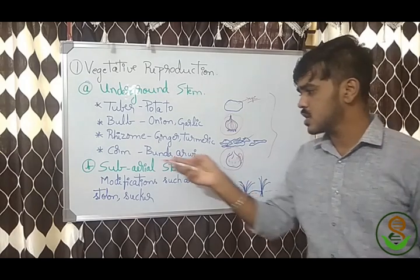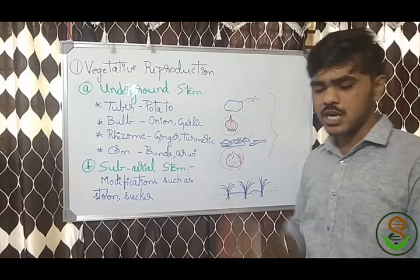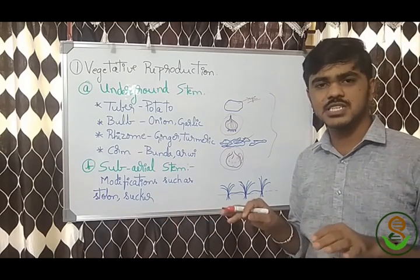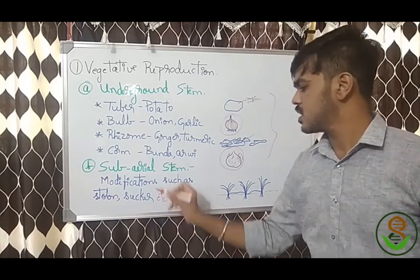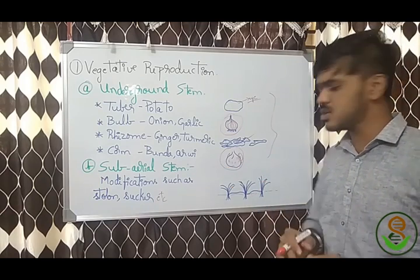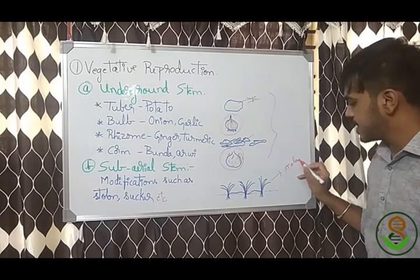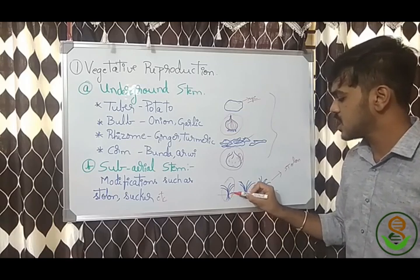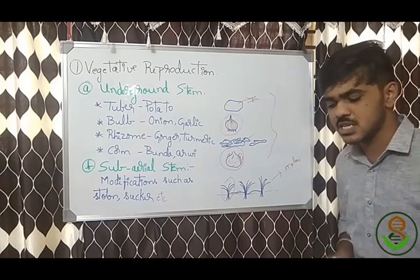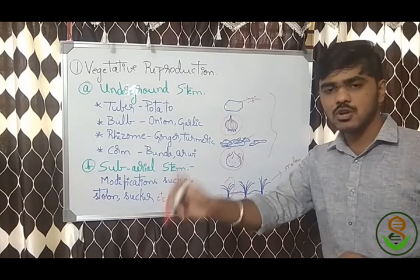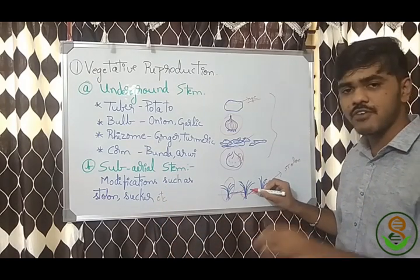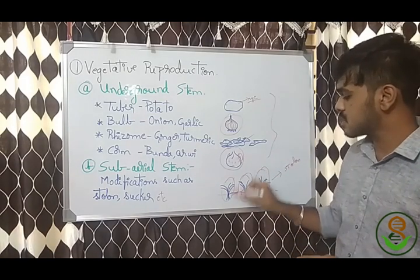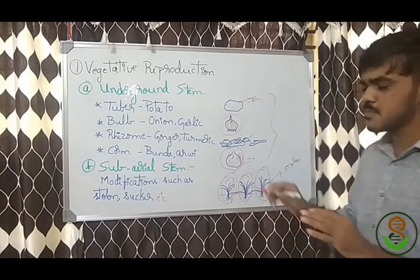Examples: tuber — potato; bulb — onion and garlic; rhizome — ginger and turmeric; corm — Colocasia and similar plants. Next, sub-aerial stems: above the underground level, modifications include stolons and suckers. In a stolon, the plant sends out horizontal runners that travel to a new point and develop into a new individual. We can cut these and use them to grow new plants.